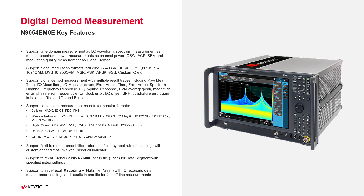First, let's talk about key features in N9054EM0E VMA Digital Demodulation. It supports Time Domain Measurement as IQ waveform, Spectral Measurement as Monitor Spectrum, Power Measurement as Channel Power, ACP, OBW, SEM, and Modulation Quality Measurement as Digital Demod. It supports various digital modulation formats such as BPSK, QPSK, QAM, and Custom IQ Constellation.